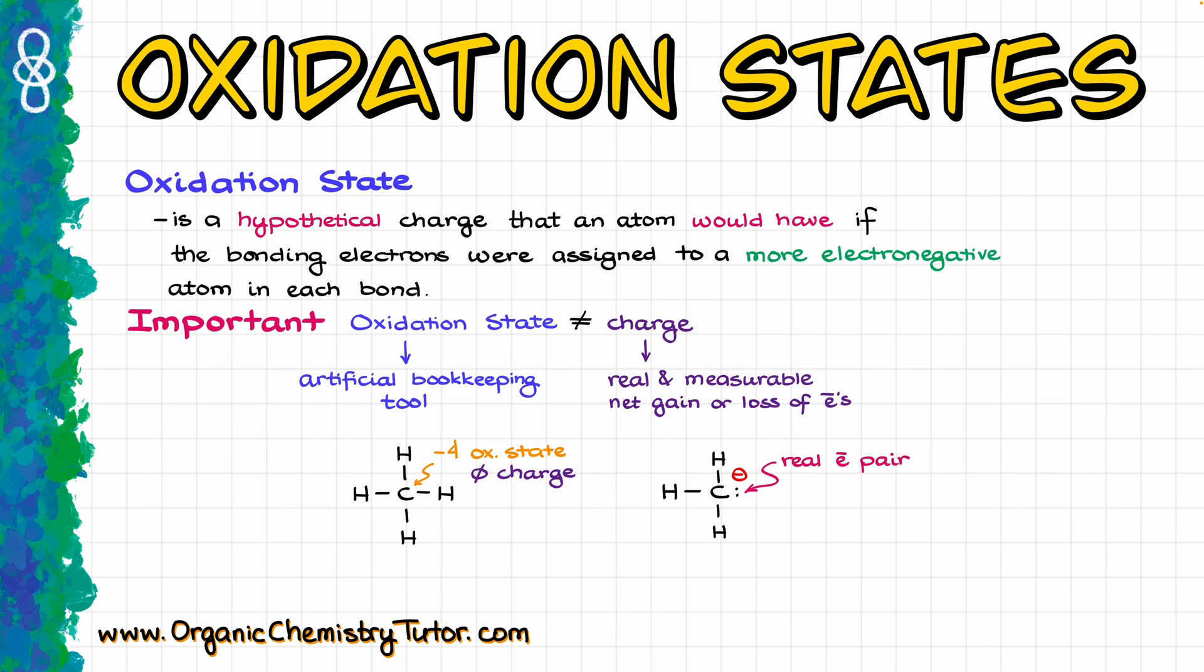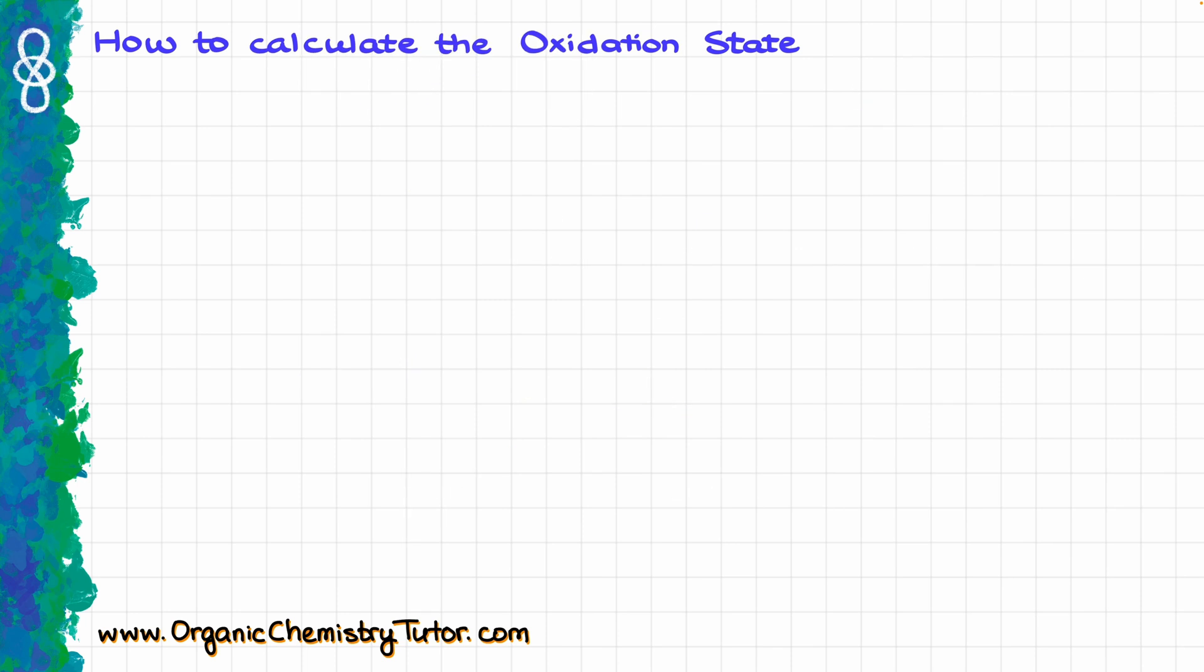Now, since we have established the difference between the oxidation states and charges, let's actually look into how we calculate our oxidation states. So, when it comes to the oxidation states in organic chemistry, first and foremost, we are going to be interested in oxidation states of a carbon atom.